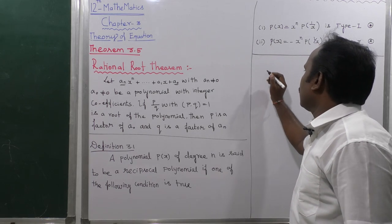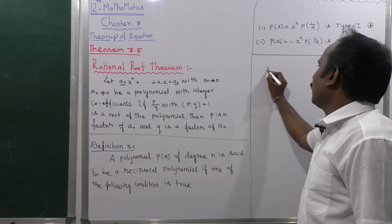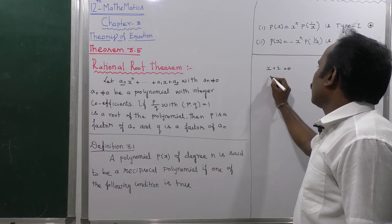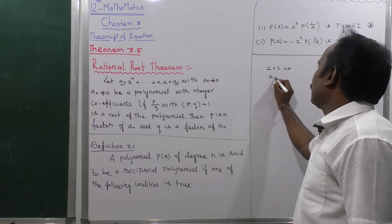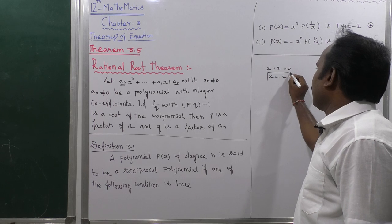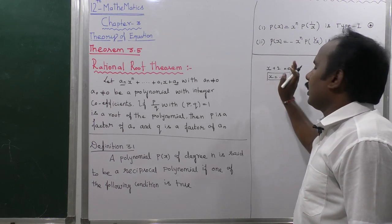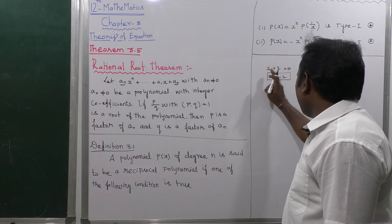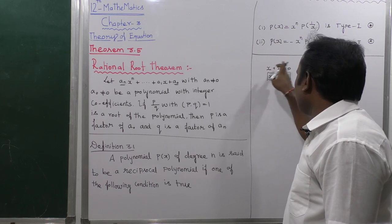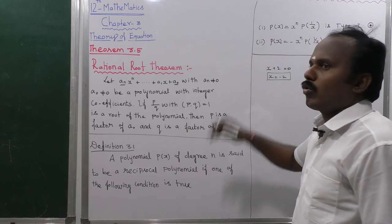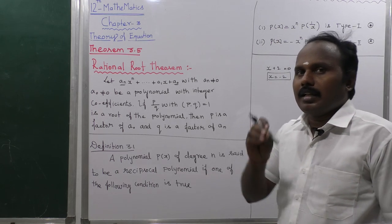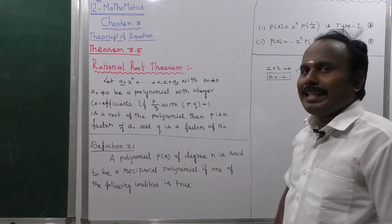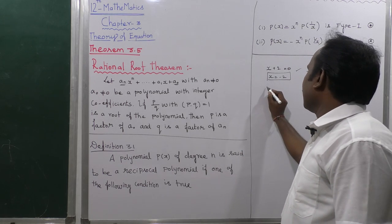Suppose we take a 1st degree equation: x + 2 = 0. Then x = -2. So this is a 1st degree equation, and x = -2 is the root of the equation. If we replace x = -2 in the equation, the equation equals 0. That is called the factor.